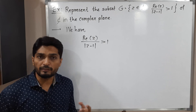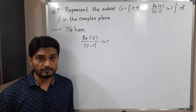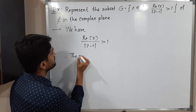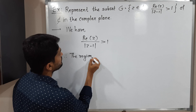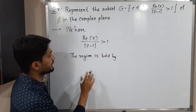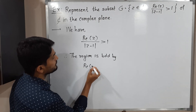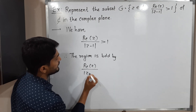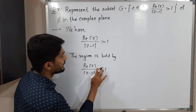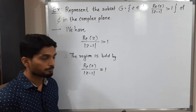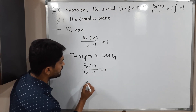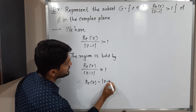Solving this problem directly with the inequality would be a little difficult, so I am going to replace the inequality by equality first. The region is bounded by: real part of z upon mod z minus one, equals one. Let us shift mod z minus one to the other side, so the real part of z equals mod z minus one.